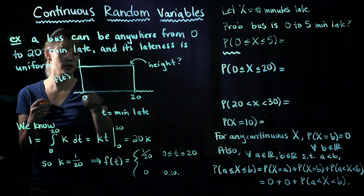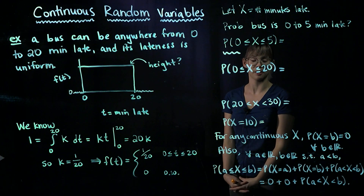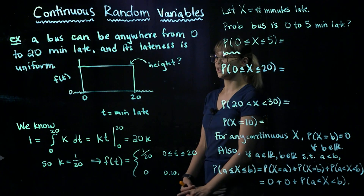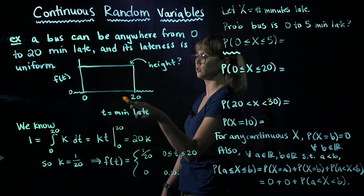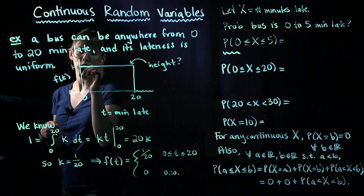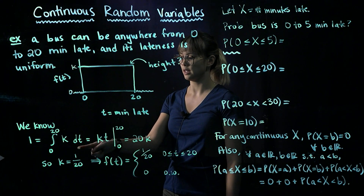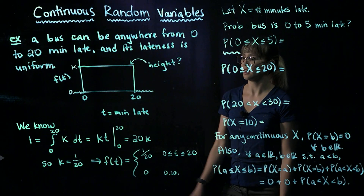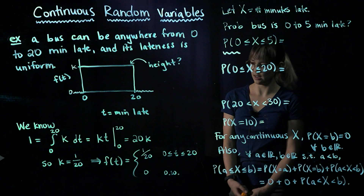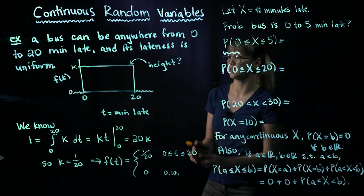We know this starts at 0, and we're wondering what the height is. Using the property that integrating over the entire PDF must equal 1: 1 equals the integral from 0 to 20 of our function with respect to t. Calling the height k, we write the integral from 0 to 20 of k dt, which gives k times t evaluated from 0 to 20, so 20k minus 0, which is 20k. Therefore 1 equals 20k, meaning k equals 1/20.